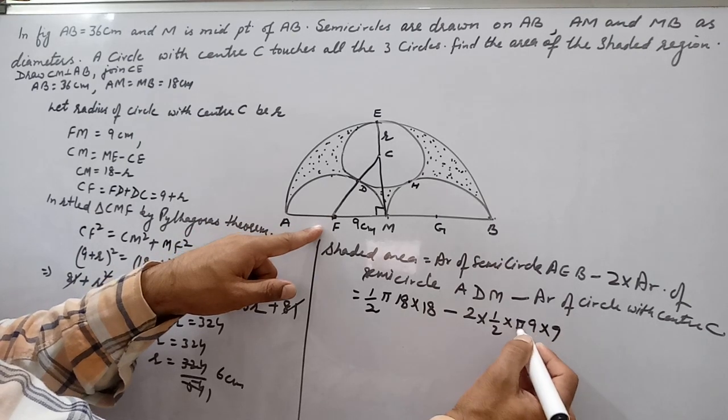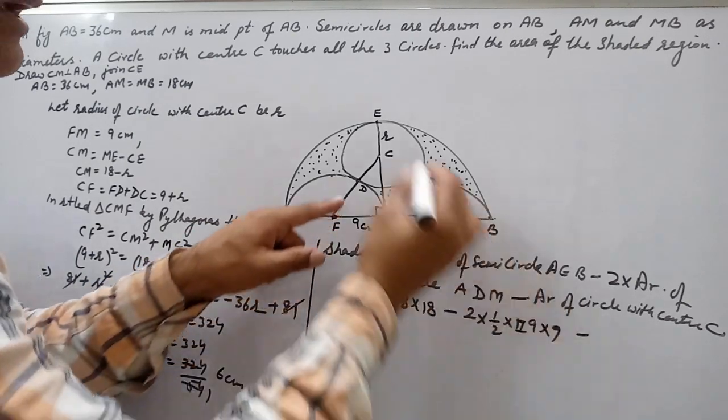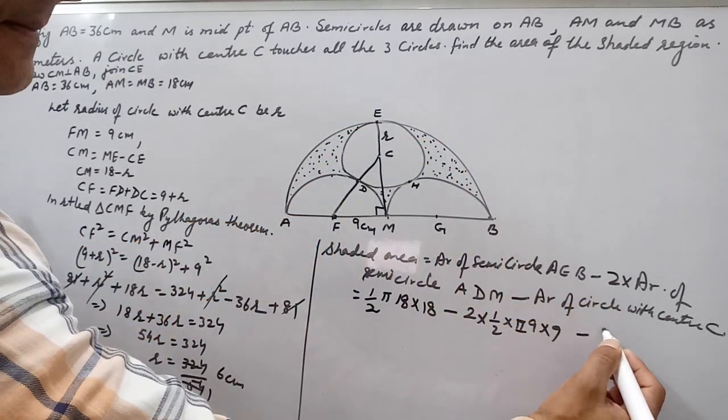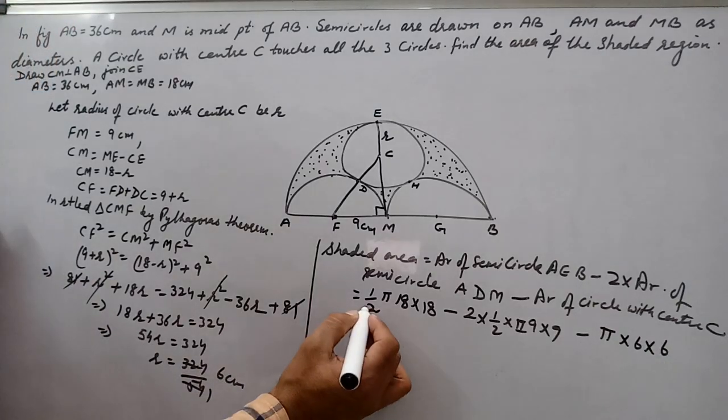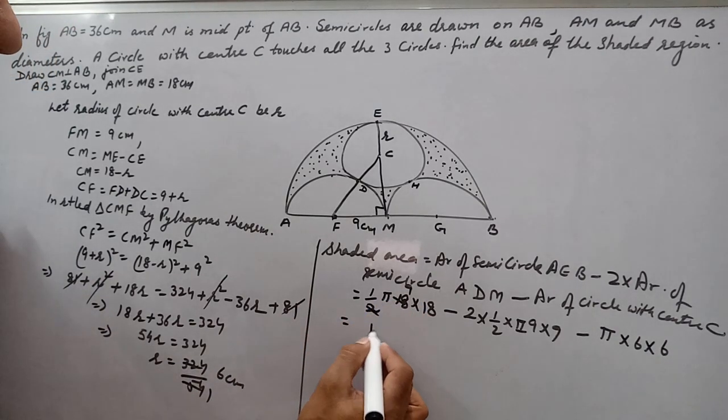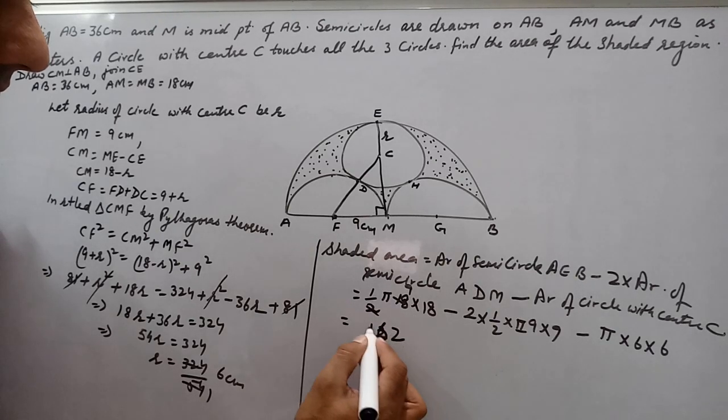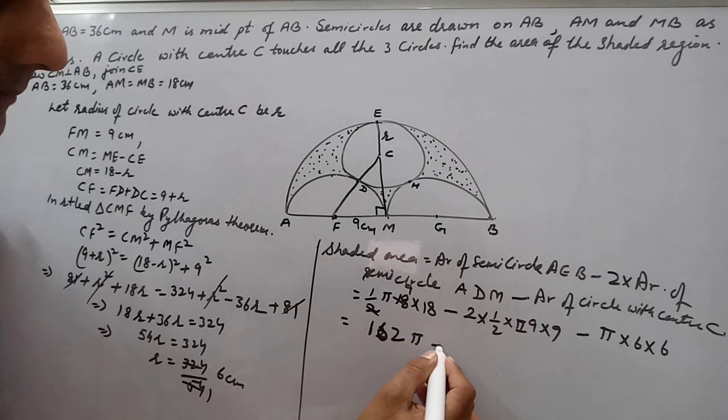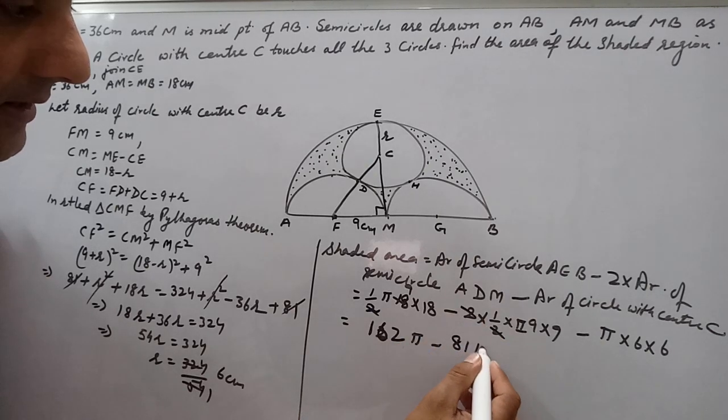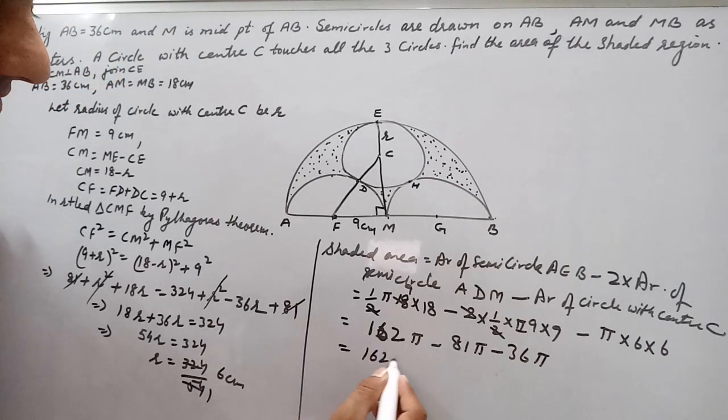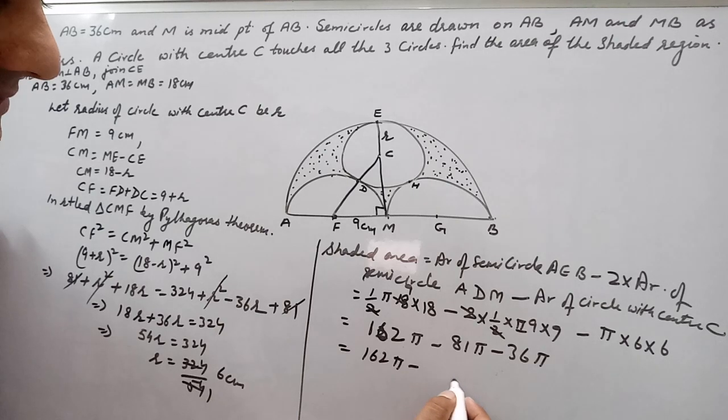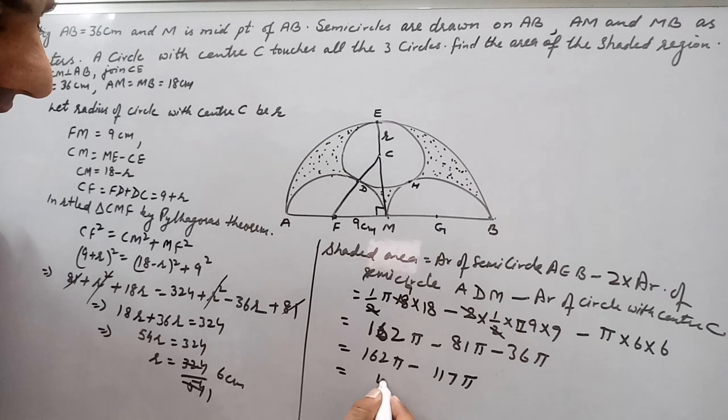Minus area of this circle, that is π R². R is 6. So it becomes 162π minus 81π minus 36π. So it becomes 162π minus 117π, which gives us 45π.